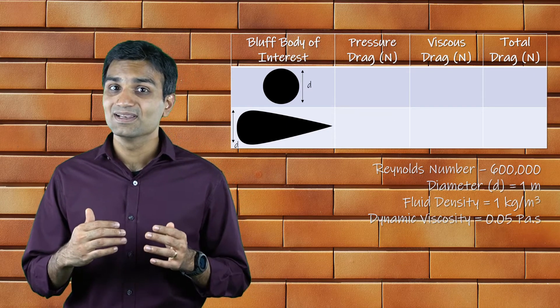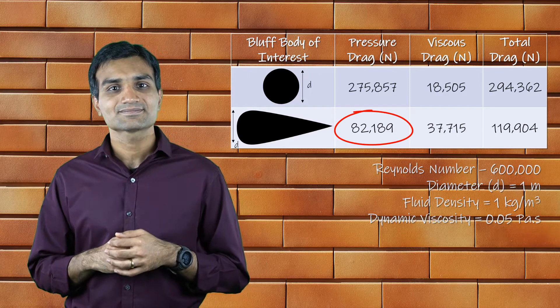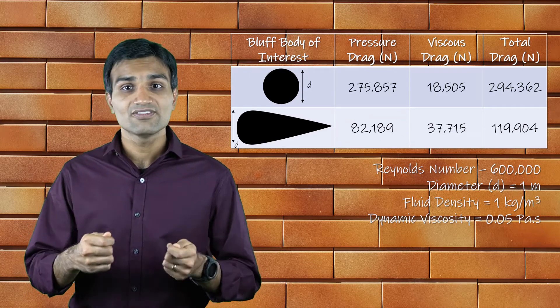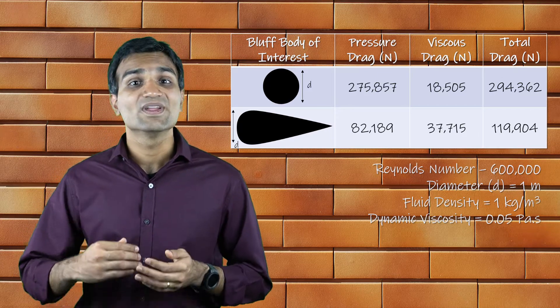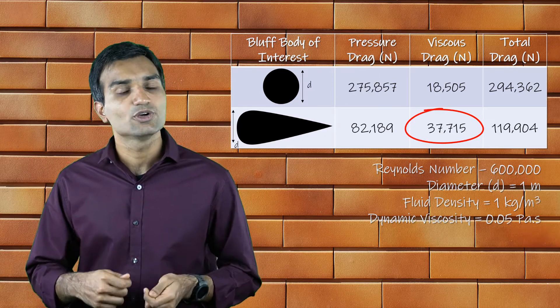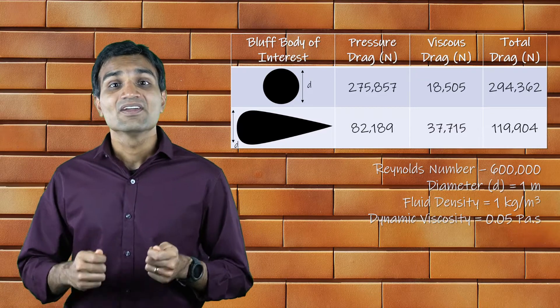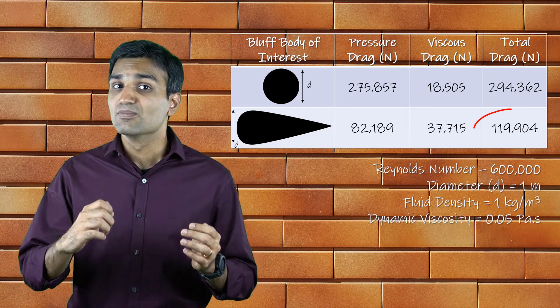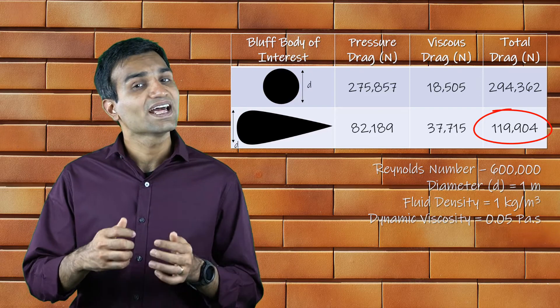This reduces the overall pressure drag and for this example, the pressure drag is reduced by a factor of 4. However, the flow remains attached to the surface over a larger area. Therefore, we end up with a larger viscous drag component compared to the cylinder case. Having said that, the total drag experienced by the streamlined body is smaller compared to that of the cylinder by nearly two and a half times.